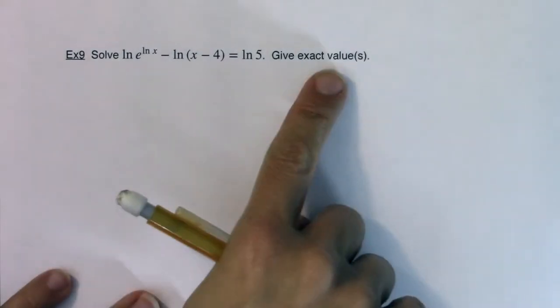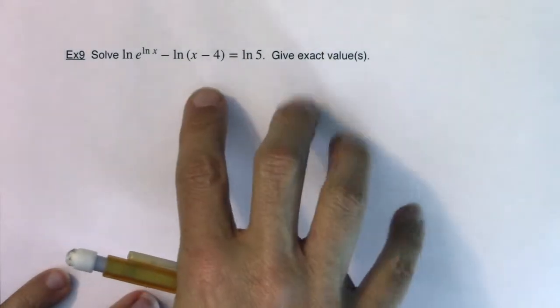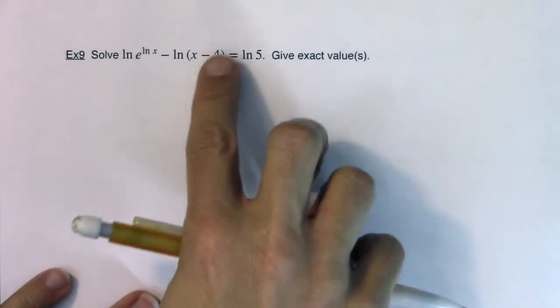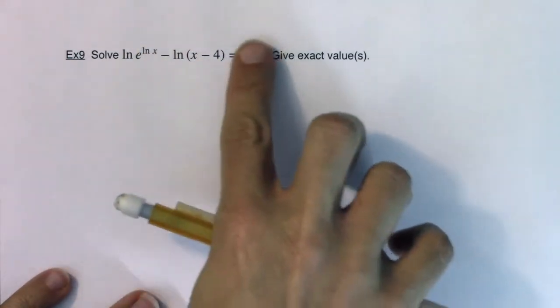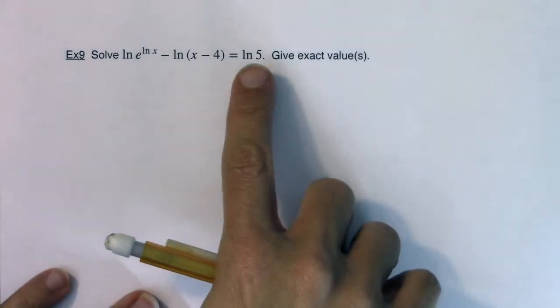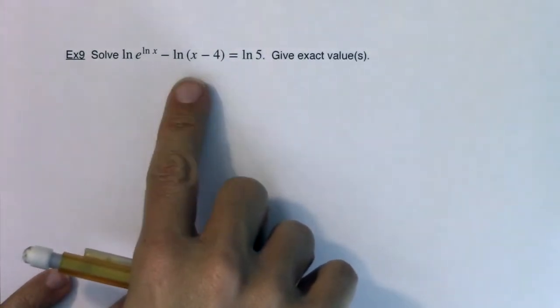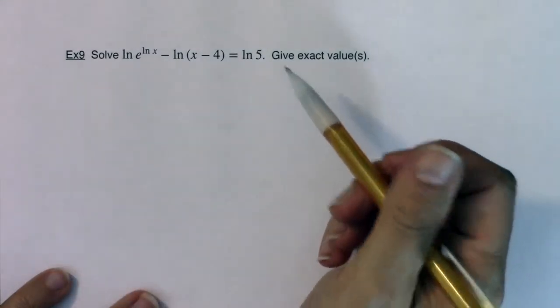I want to solve this thing and give exact values, so I'm going to try and not use my calculator as I go through this. But my game plan is to get a single logarithm on each side of the equation and then set the arguments equal to each other. And so I'm good to go on the right side. I do have a single logarithm, but on the left side I do not have a single logarithm. Alright, so let's take a look.